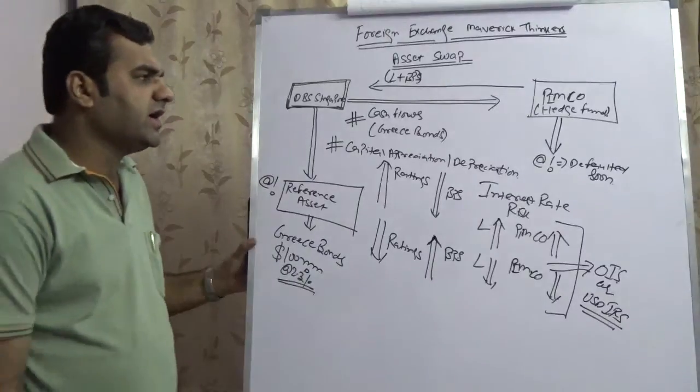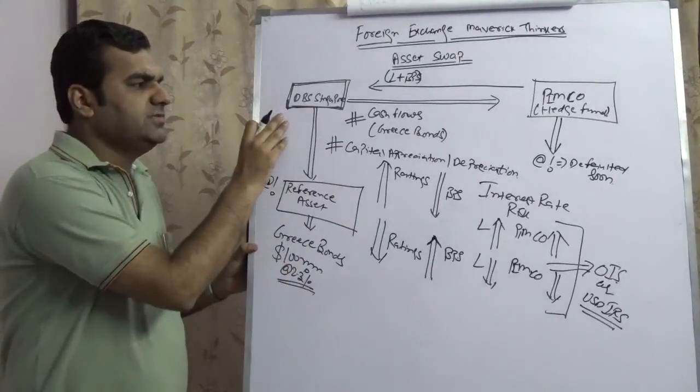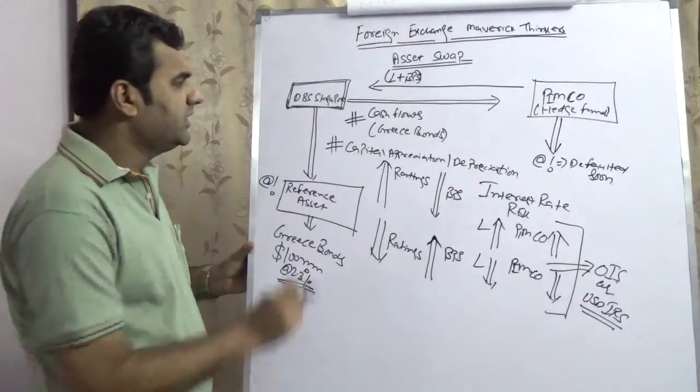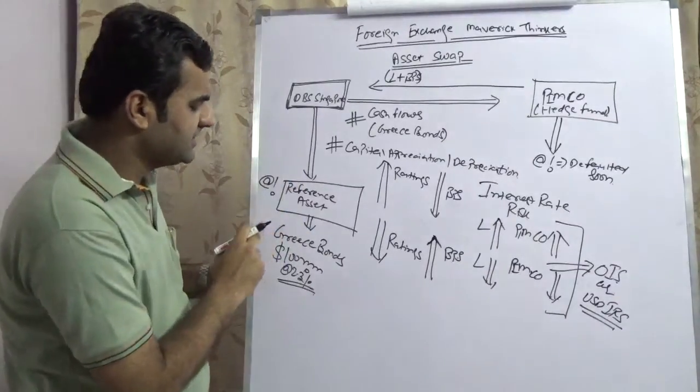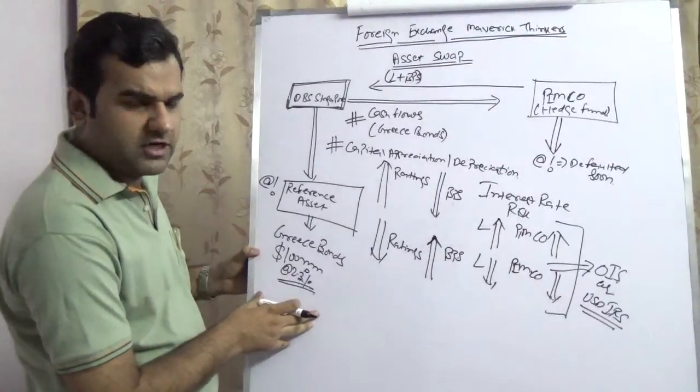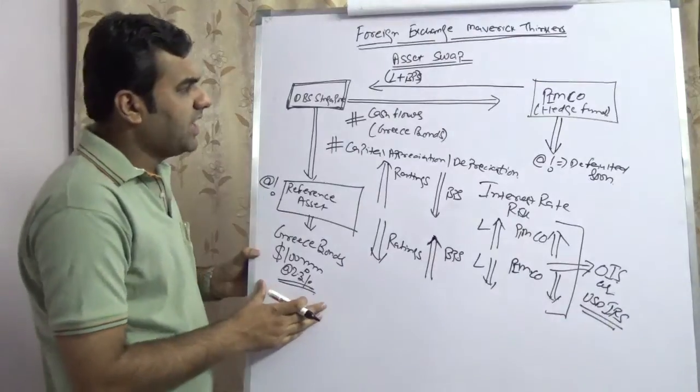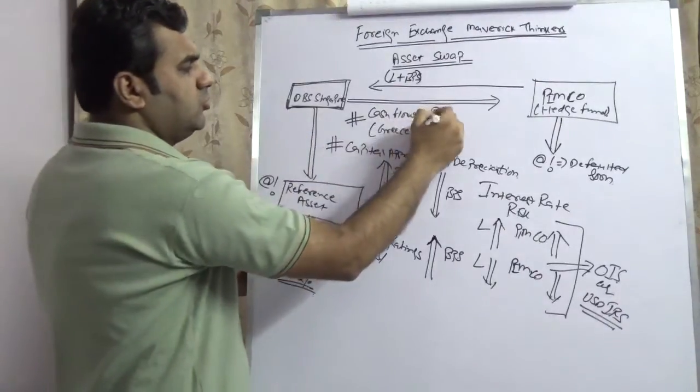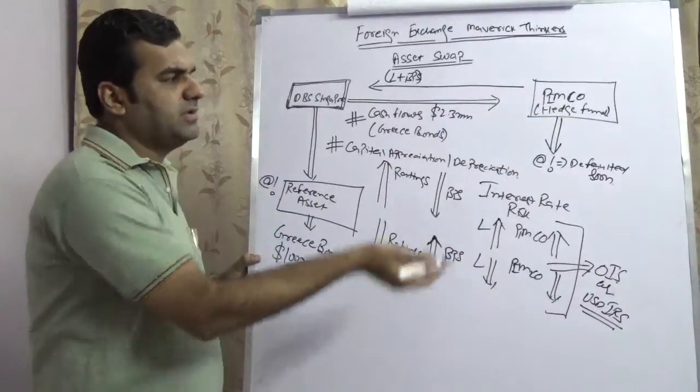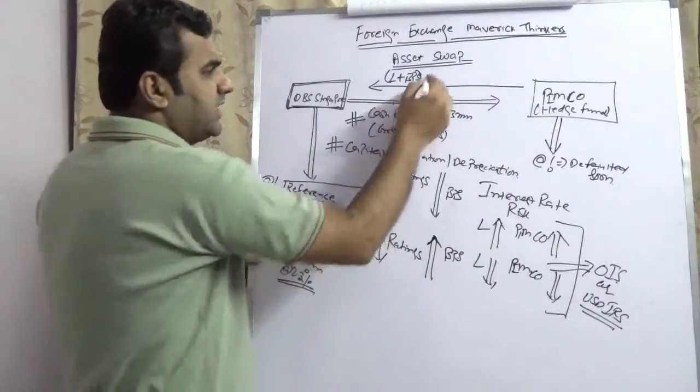To recap, we have two banks: DBS Singapore and a hedge fund which is PIMCO. DBS Singapore is having a reference asset, assuming Greece bonds of $100 million at 2.3%. That 2.3 million every year they transfer to PIMCO, and PIMCO transfers LIBOR plus a few basis points. That is yearly.